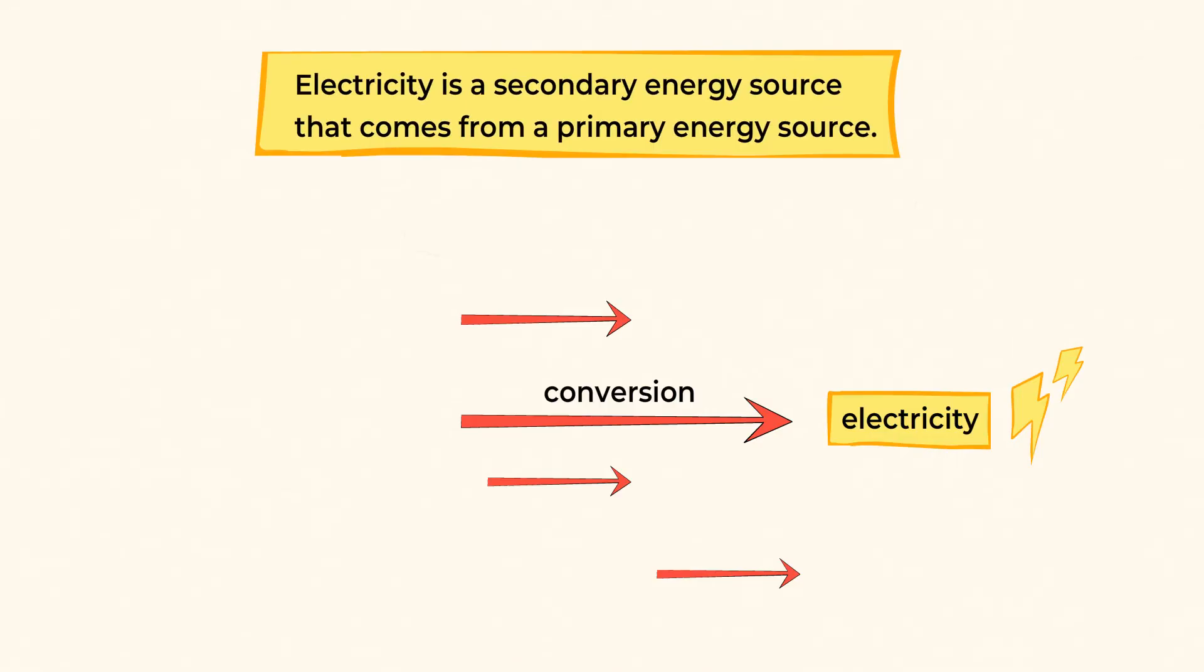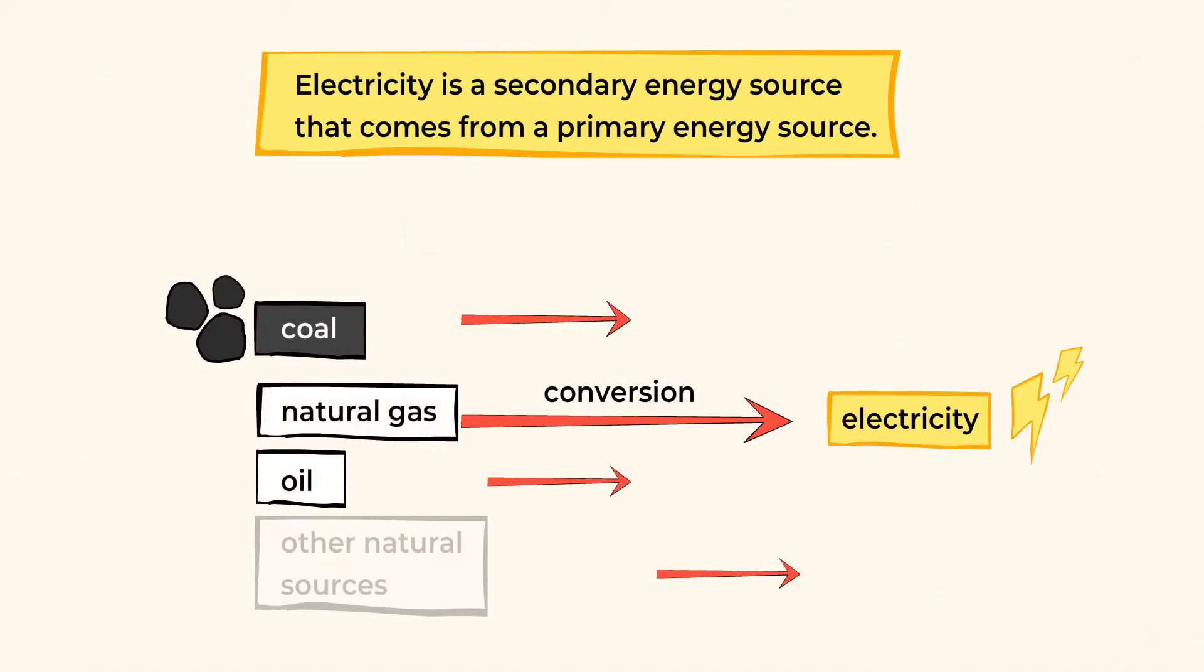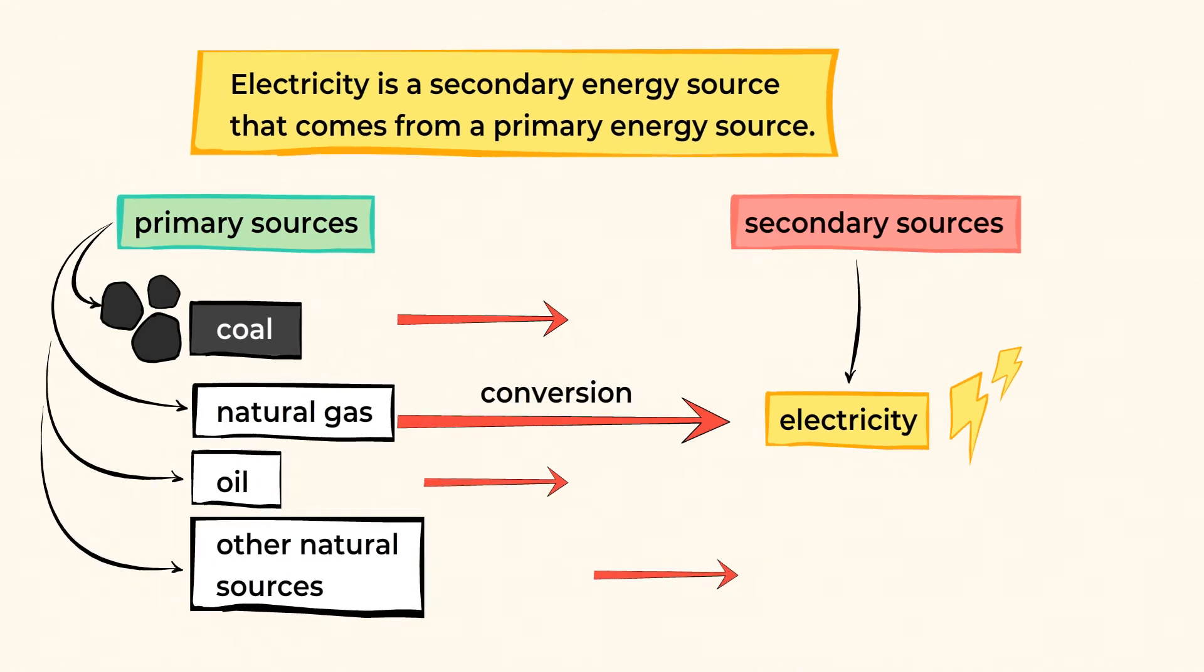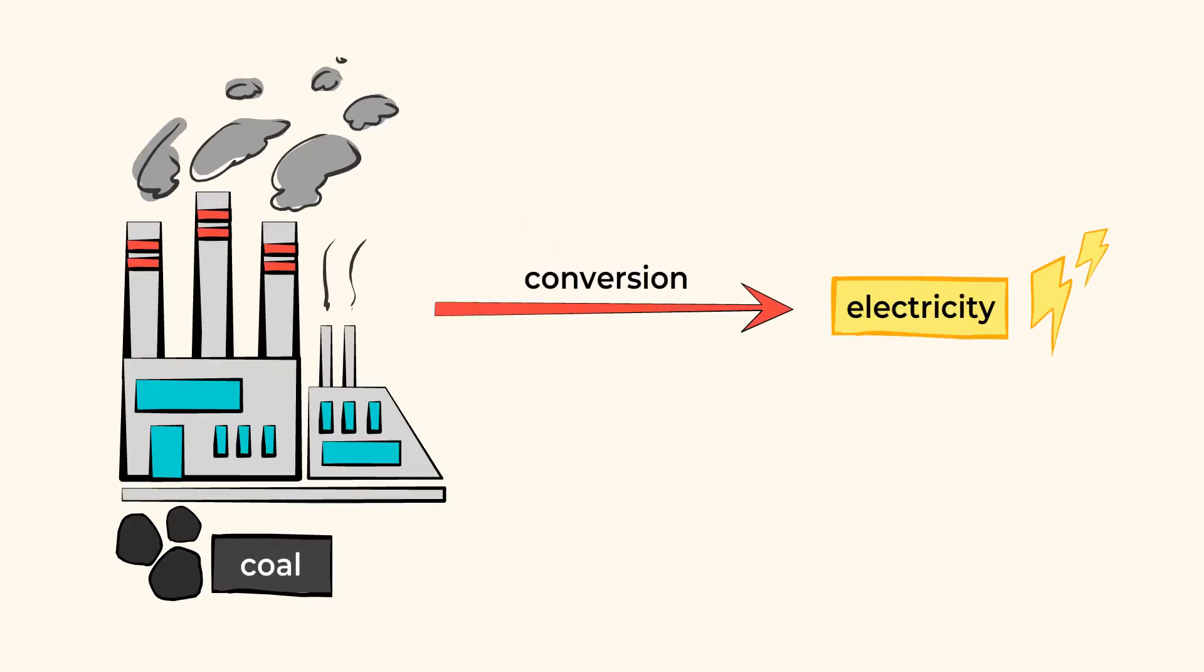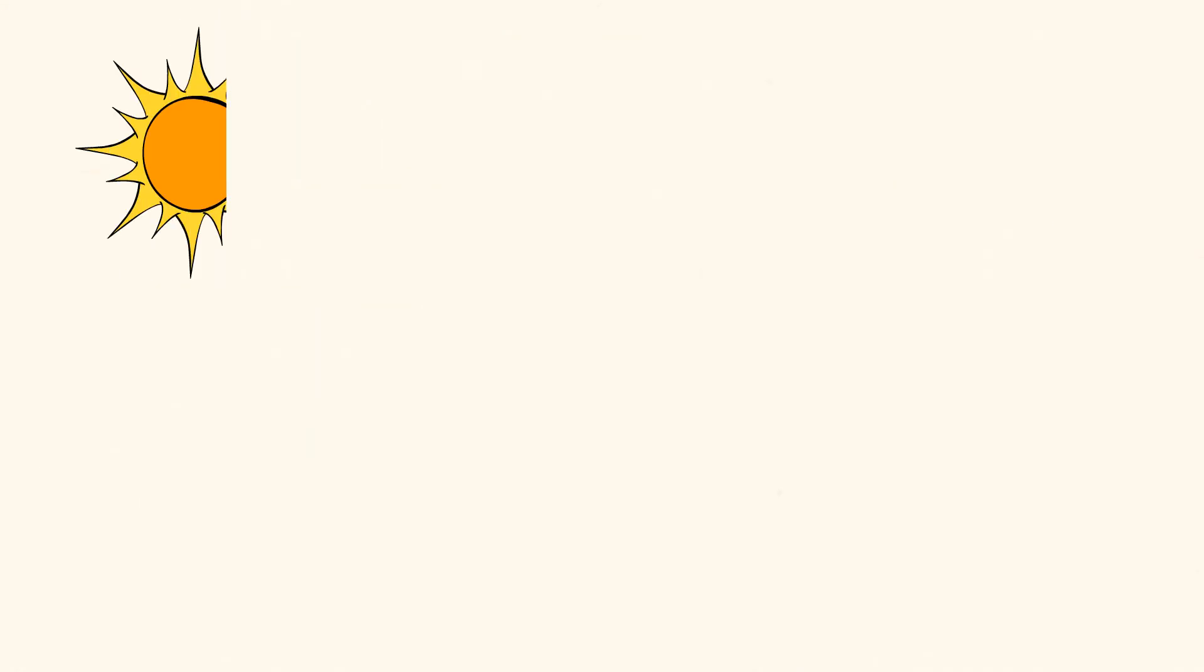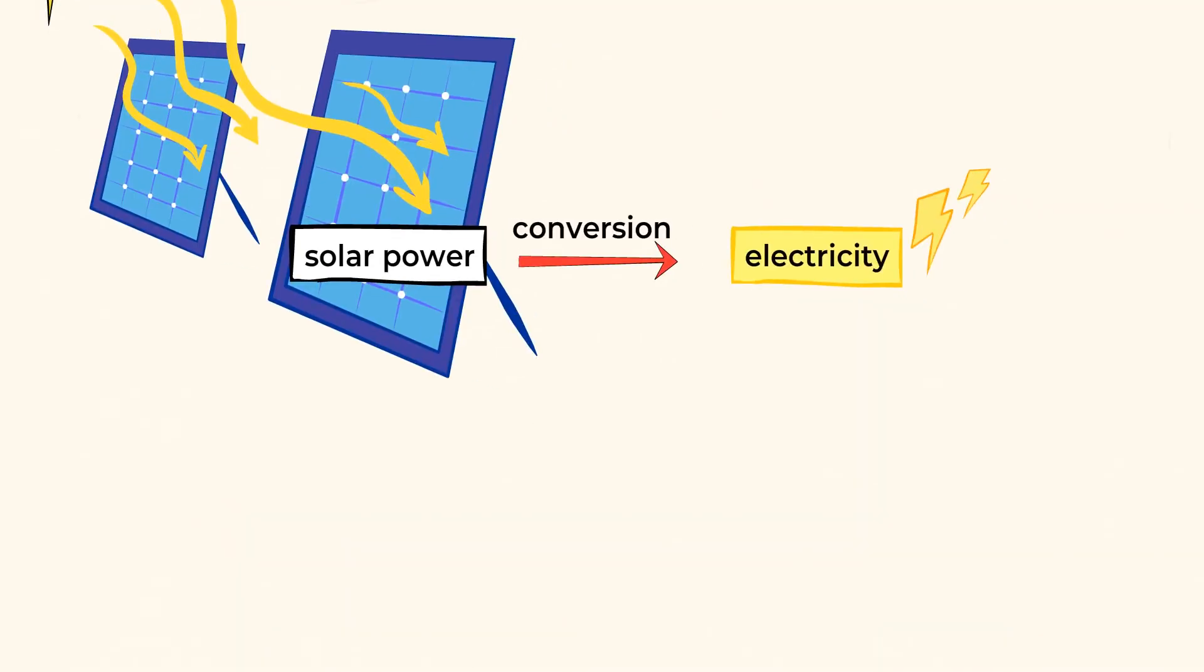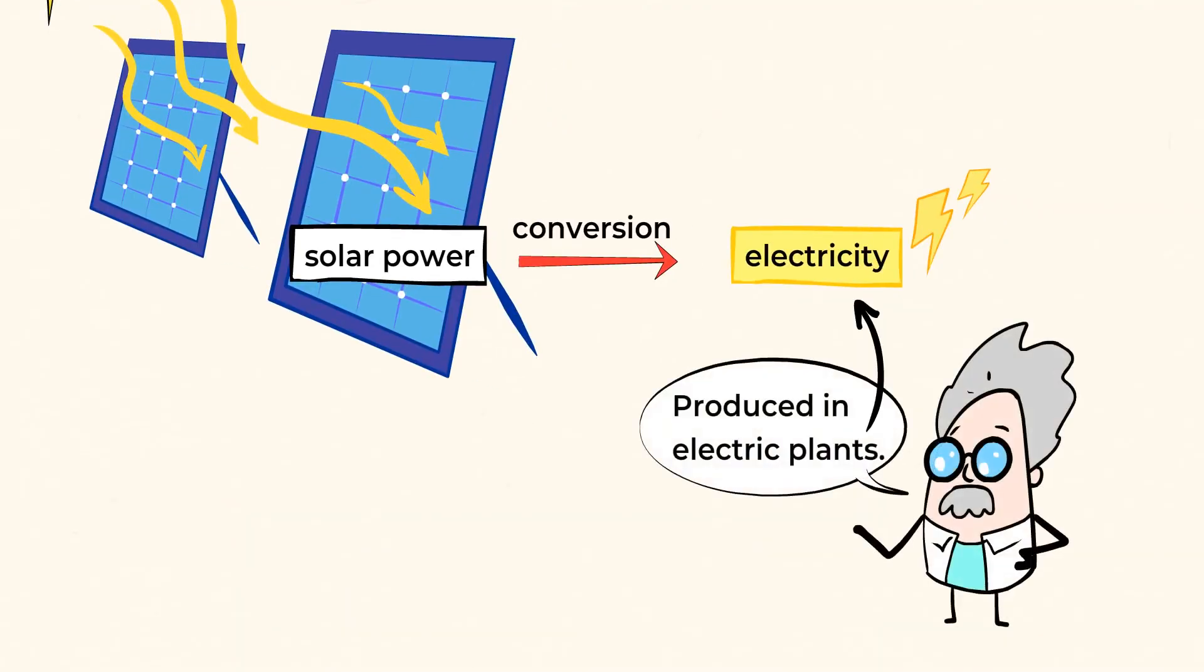For example, we can burn coal, or natural gas, or oil, or we can harness other natural resources. We call those primary sources. Once we gather the primary source and transform it to make a new type of energy, we now have a secondary source. For example, we can burn coal to make electricity, or we can harness solar power from the sun to create electricity. Most of our electric energy is usually produced in electric plants.